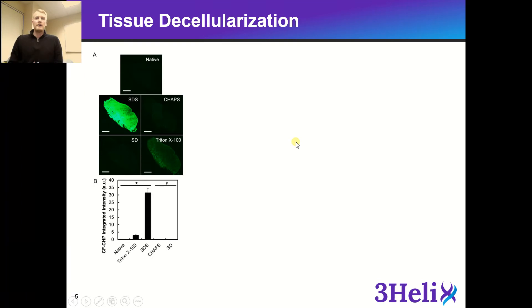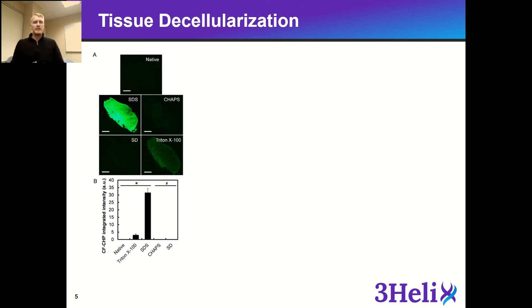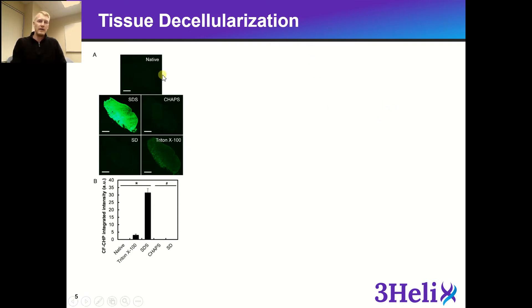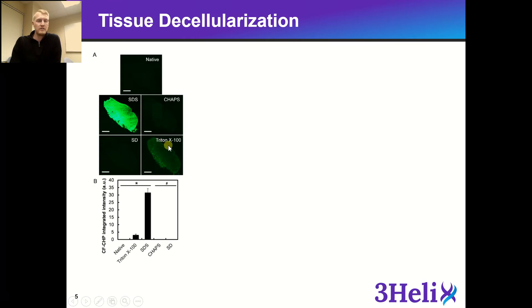Tissue decellularization is important to the field of tissue engineering. When researchers create scaffolds, they oftentimes will use cells to create the ECM first, and then they will need to remove the cells before use to reduce the chance of an immune response. In this experiment, we used porcine ligaments with a healthy tissue control, and compared common tissue decellularization detergents such as SDS, CHAPS, Triton X-100, and SD. You can visually see that SDS causes a high amount of collagen damage to the scaffolds, where Triton X-100 causes slight damage, and both SD and CHAPS caused no damage.